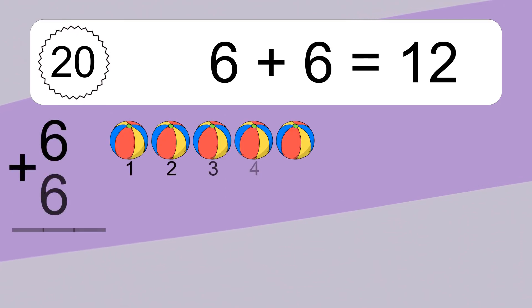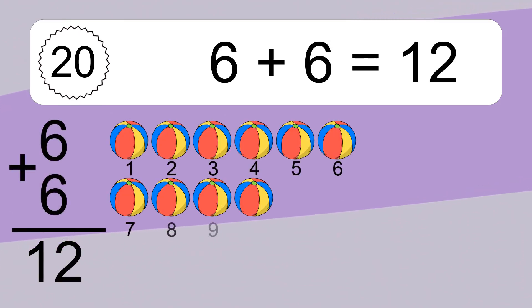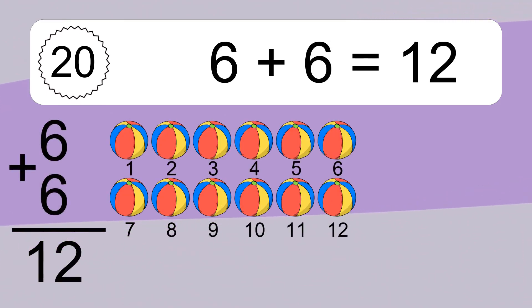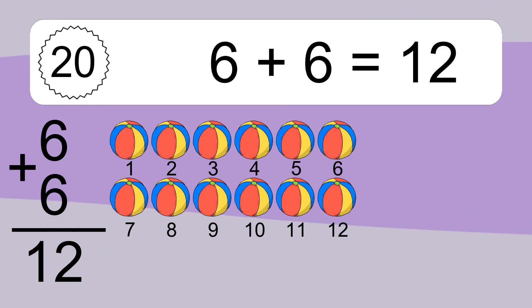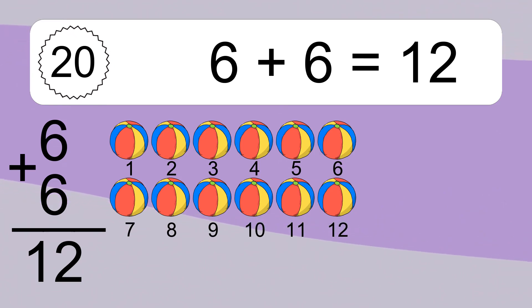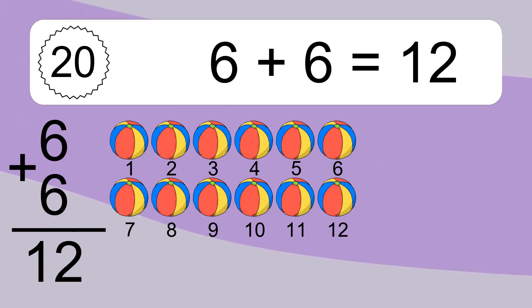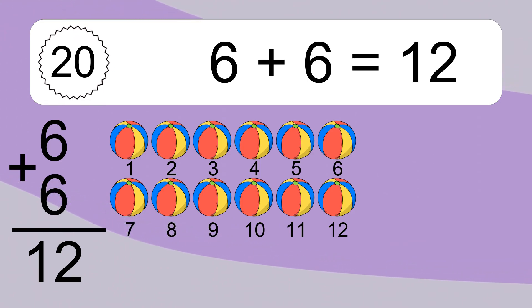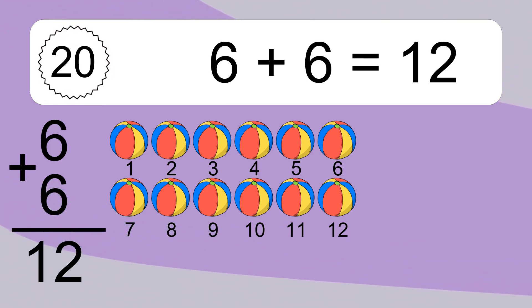6 plus 6 equals what? 6 plus 6 equals 12. Let's count it: 1, 2, 3, 4, 5, 6, 7, 8, 9, 10, 11, 12.